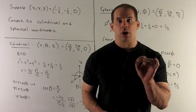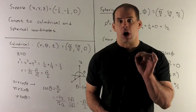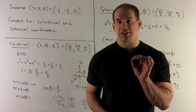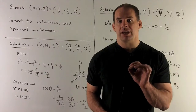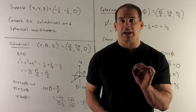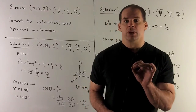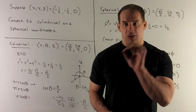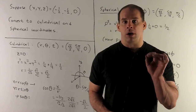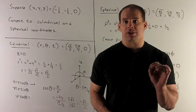For cylindrical coordinates, we're looking for r, theta, and z. Z is given for free — z is zero. So I just need r and theta. For x and y in the xy plane, we get r and theta just by converting to polar coordinates.